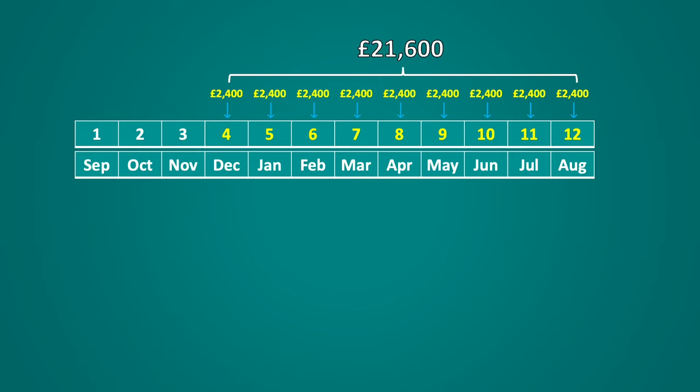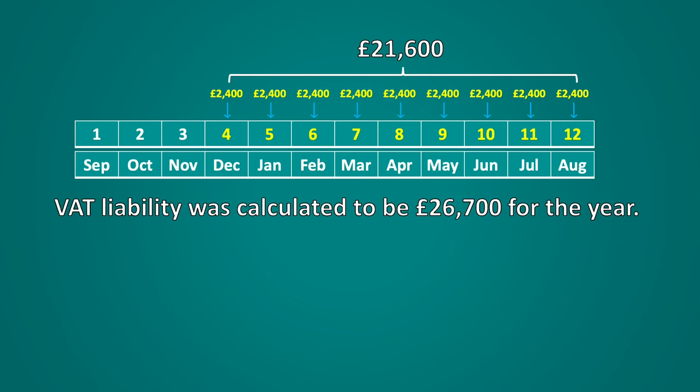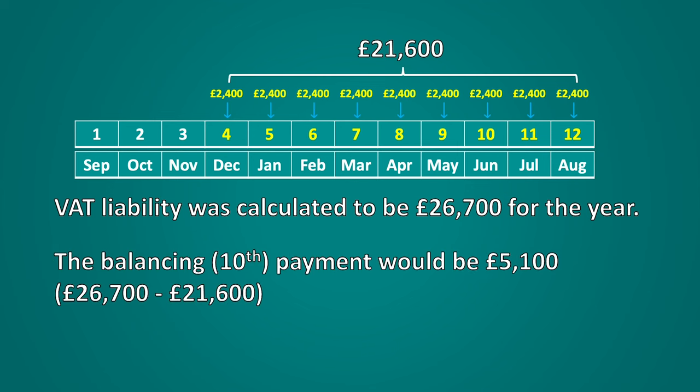The VAT liability for the year has been calculated as £26,700. The 10th and balancing payment would therefore be calculated as £26,700 less what had been paid of £21,600, to give you £5,100 to be paid.